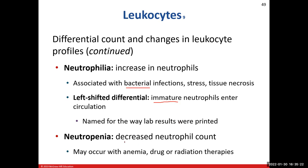A decreased neutrophil count is called neutropenia. Causes include anemia and drug or radiation therapies, which target actively dividing cells. Think of cancer as out-of-control, abnormal cell growth. These drug and radiation therapies stop cells capable of division from dividing, targeting bone marrow, where many blood-formed elements are created in the red bone marrow. If you're taking chemotherapy or radiation, you will see a decrease in neutrophil count.